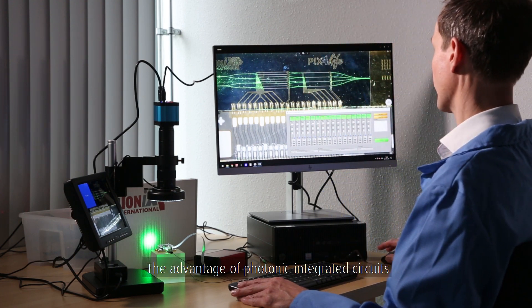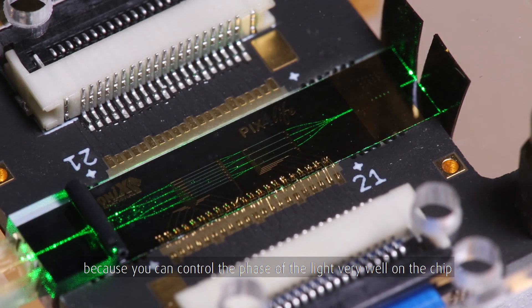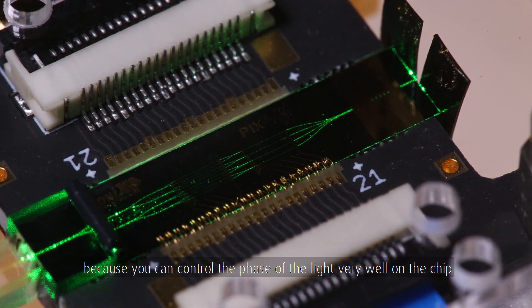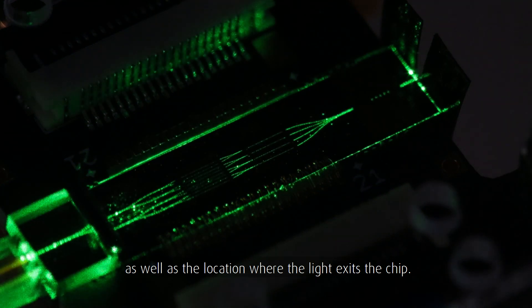The advantage of photonic integrated circuits is that you can create very small engines to create structured light because you can control the phase of the light very well on the chip, as well as the location where the light exits the chip.